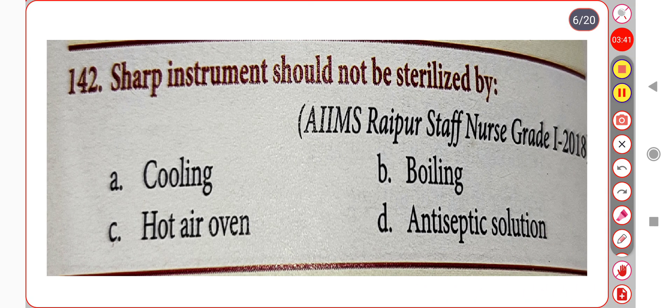Next question. Sharp instruments should not be sterilized by: Option A. Cooling. Option B. Boiling. Option C. Hot air oven. Option D. Antiseptic solution. Correct answer is Option B: Boiling.